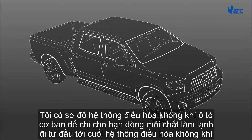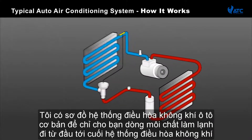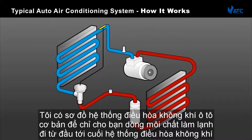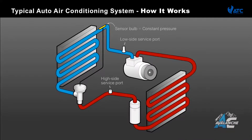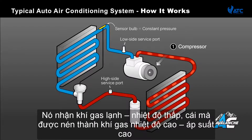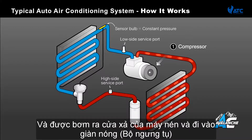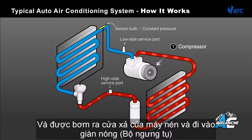We have designed a basic auto air conditioning system diagram to show you the flow of refrigerant throughout the AC system. The compressor is the workhorse of the system and is where we'll start. It receives cool, low pressure gas, which is compressed into a high pressure, high temperature gas and pumped out of the discharge side of the compressor and flows into the condenser.